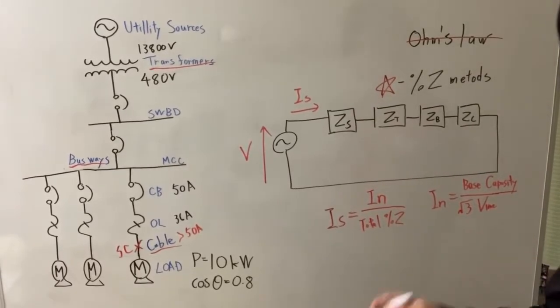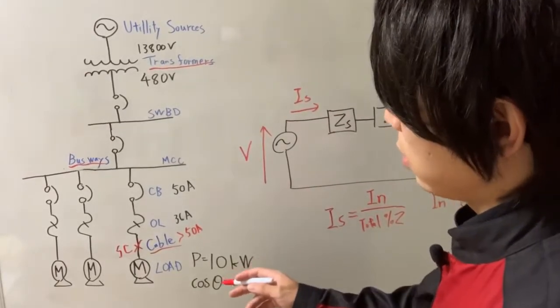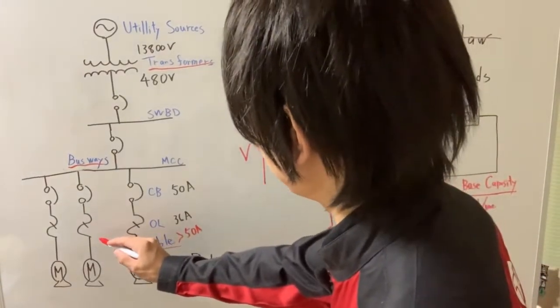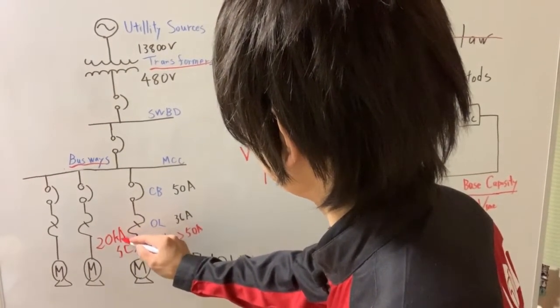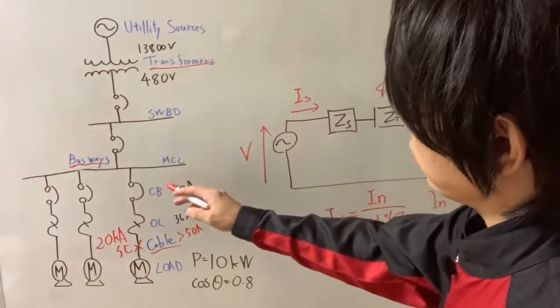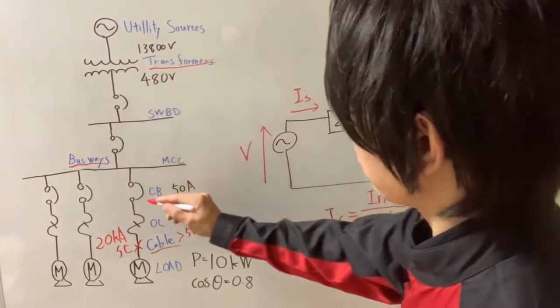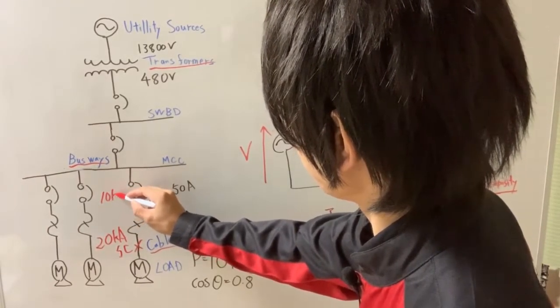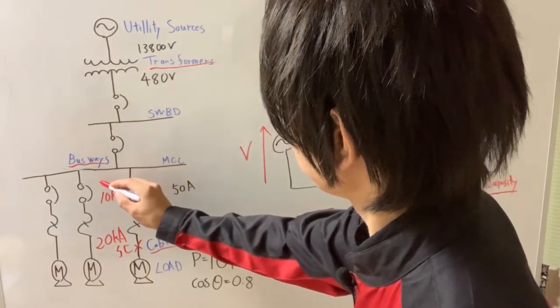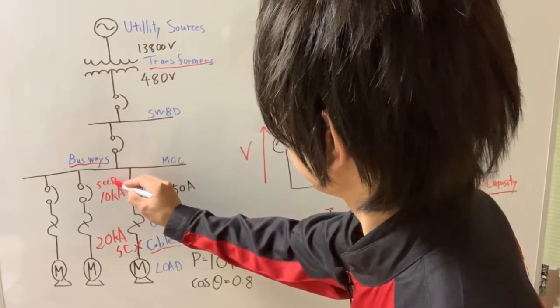Okay. So let's assume the short circuit current is 20 kA, for example. And the breaker's SCCR is 10 kA.